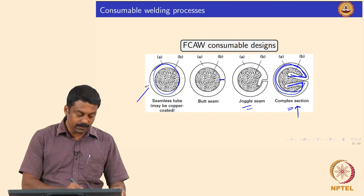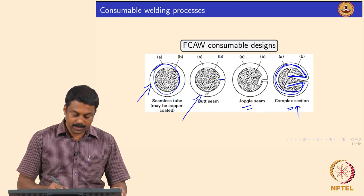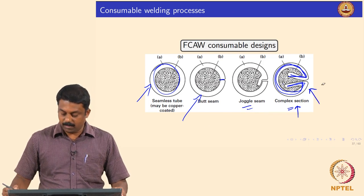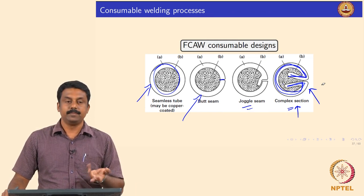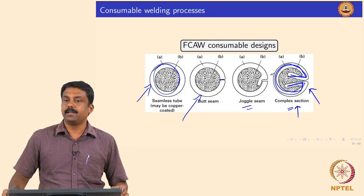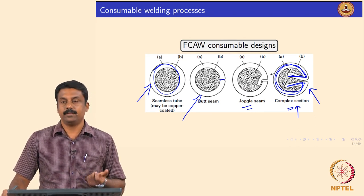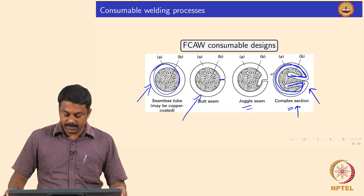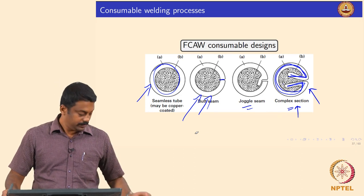In most cases, self-shielded FCAW uses a seamless tube or butt-seamed electrode design. For a complex-section or joggle-seam FCAW consumable, you generally need extra external shielding because the volume fraction of flux relative to metal decreases significantly, so insufficient shielding gas is generated. These are the commonly used designs for FCAW; the circulated sample is a butt-seamed electrode.